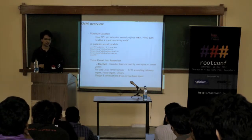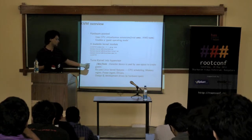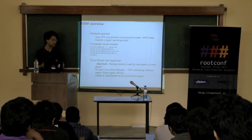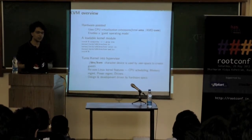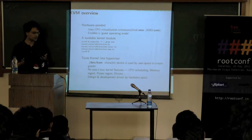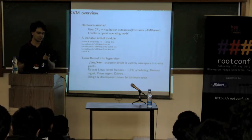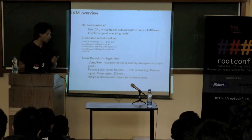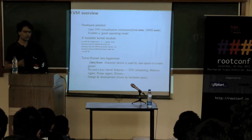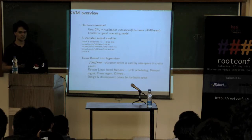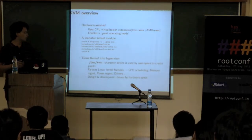KVM exports a character device called /dev/kvm so that user space can create virtual machines and allocate memory using this device. A powerful feature of KVM is that it reuses existing Linux kernel infrastructure — things like CPU scheduling, memory management, timer handling, NUMA, and device drivers — instead of reinventing the wheel. This lets KVM developers concentrate on the core virtualization problem itself.